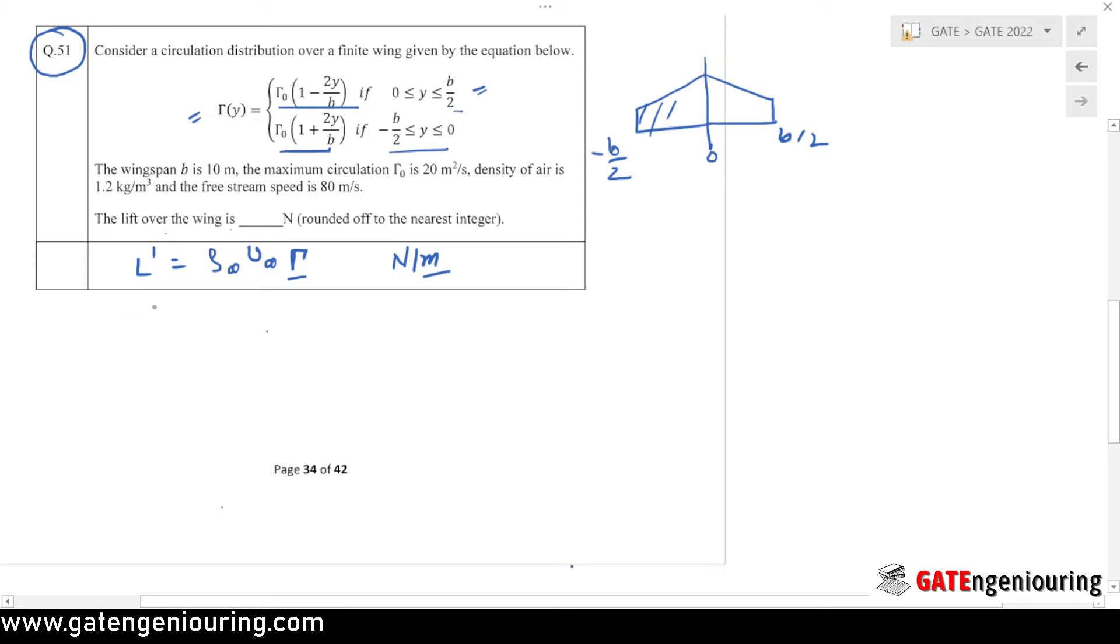To find out the lift in newtons, we have to multiply with the wing span, so L = L' into b. This is what we have to find out, so first we will go for this.